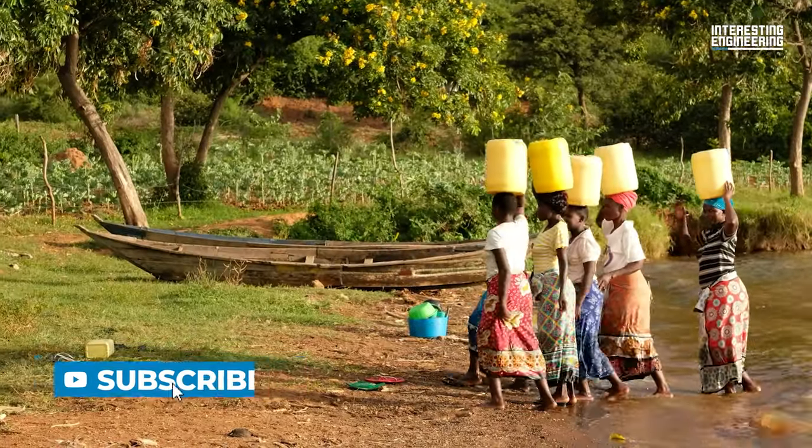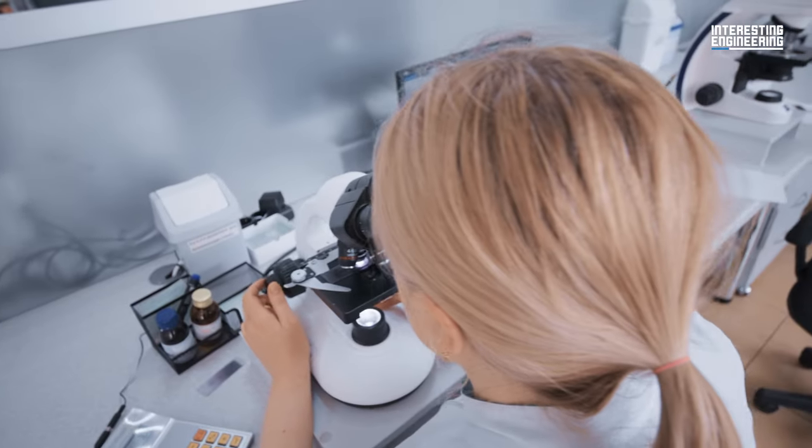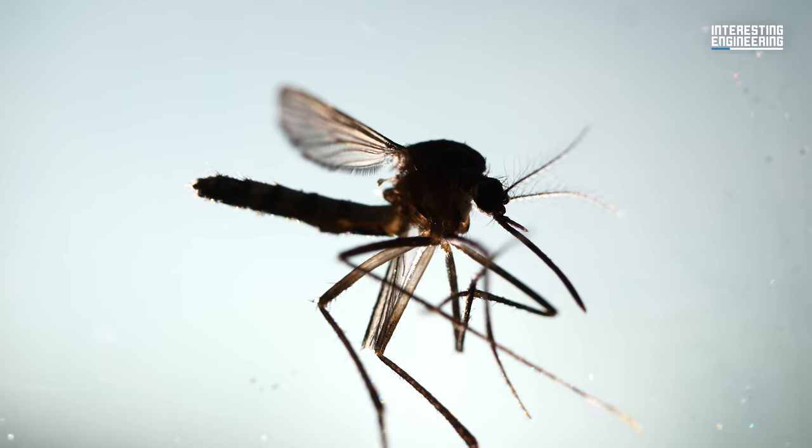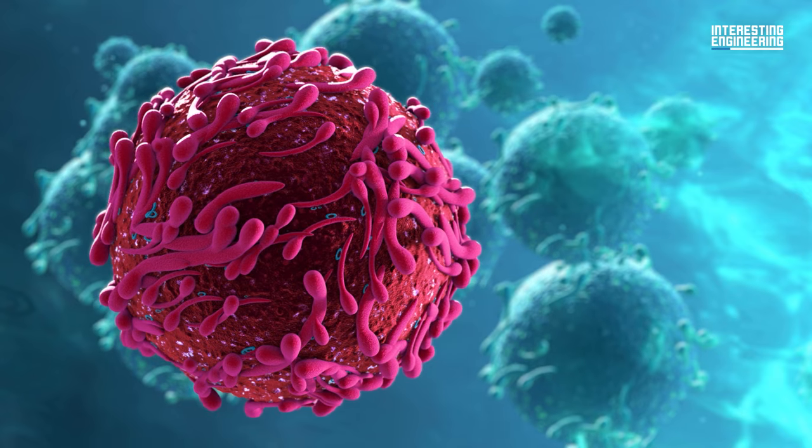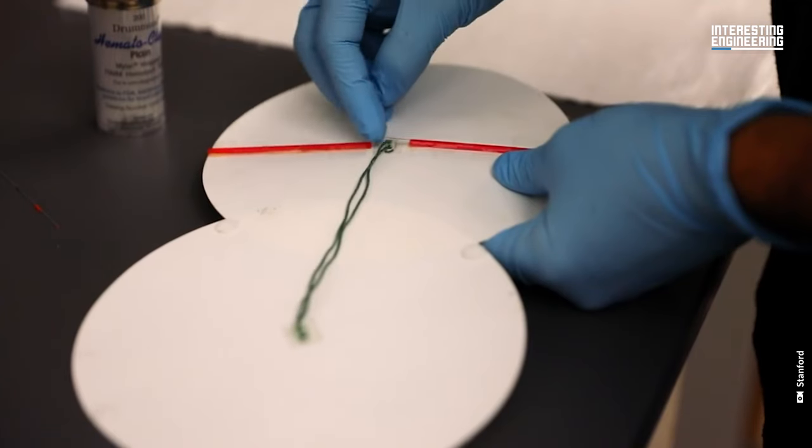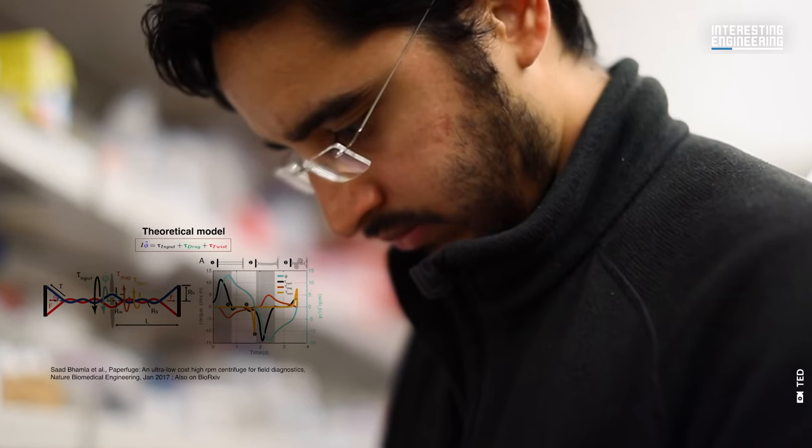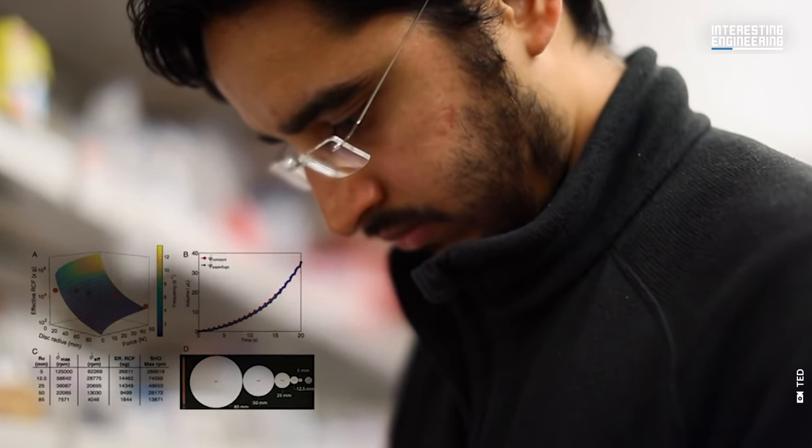After they realized that many poor countries can't afford laboratory centrifuges, which are critical for detecting diseases such as malaria, African sleeping sickness, HIV, and tuberculosis, due to the price point being a couple thousand per machine, they spent some time trying to understand how their childhood toy worked.